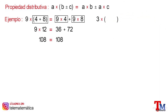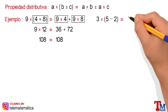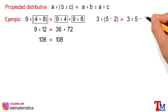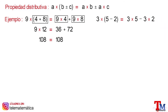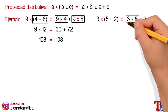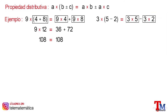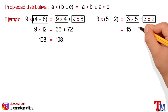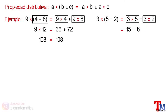Let's see an example with the difference. Applying the property, we would have 3 multiplied by 5 minus 3 multiplied by 2. Solving the products, we would have 15 minus 6, and solving the difference, this will be equal to 9.